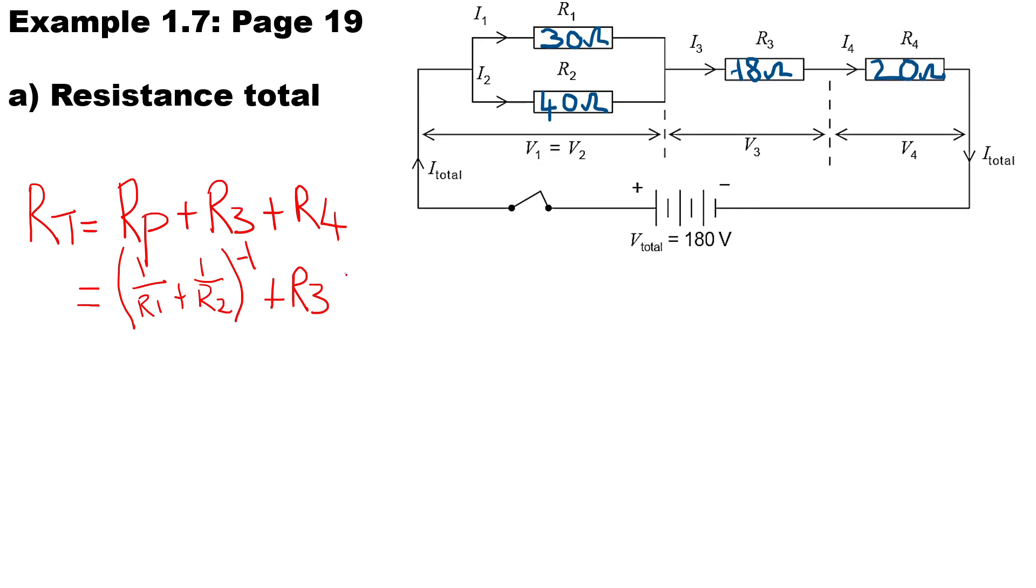Substitute the values in here. Inside the brackets, the value of R1 is 30 ohms, the value of R2 is 40 ohms. Don't forget to say to the power of minus 1 in order to invert the answer. The value of R3 is 18 ohms and the value of R4 is 20 ohms.